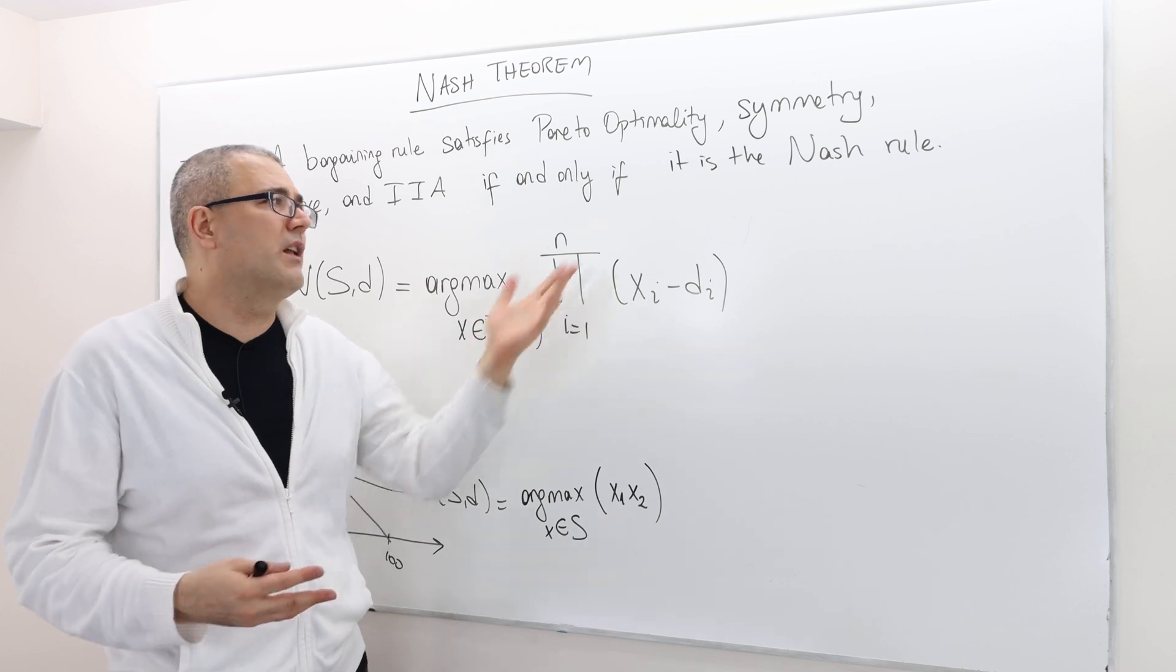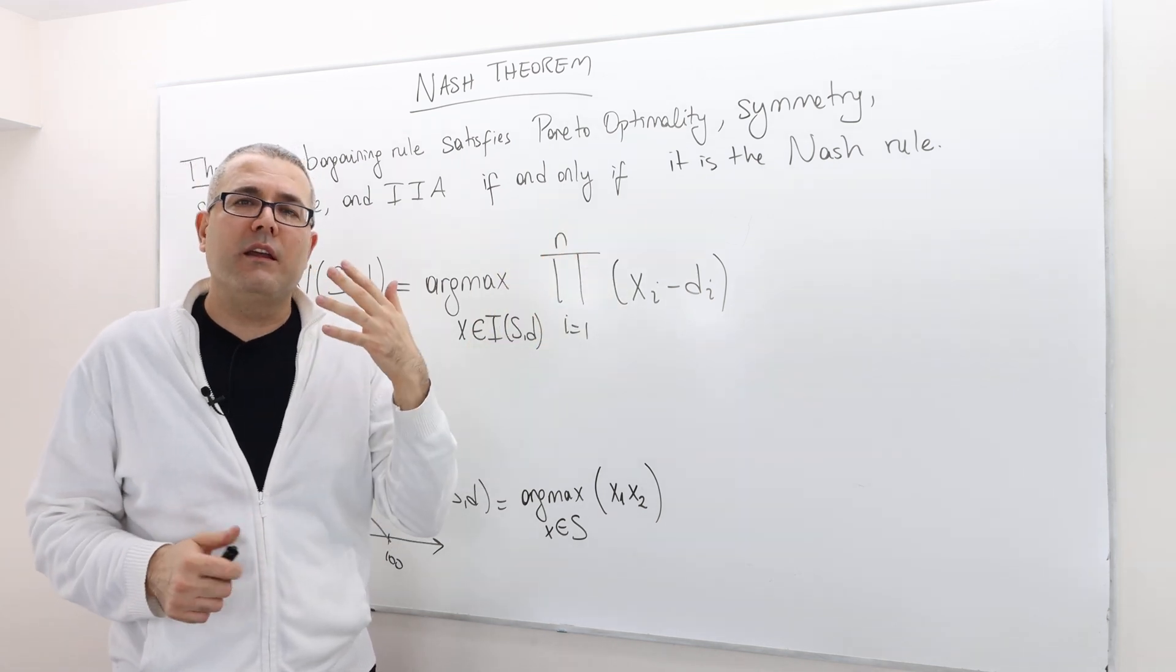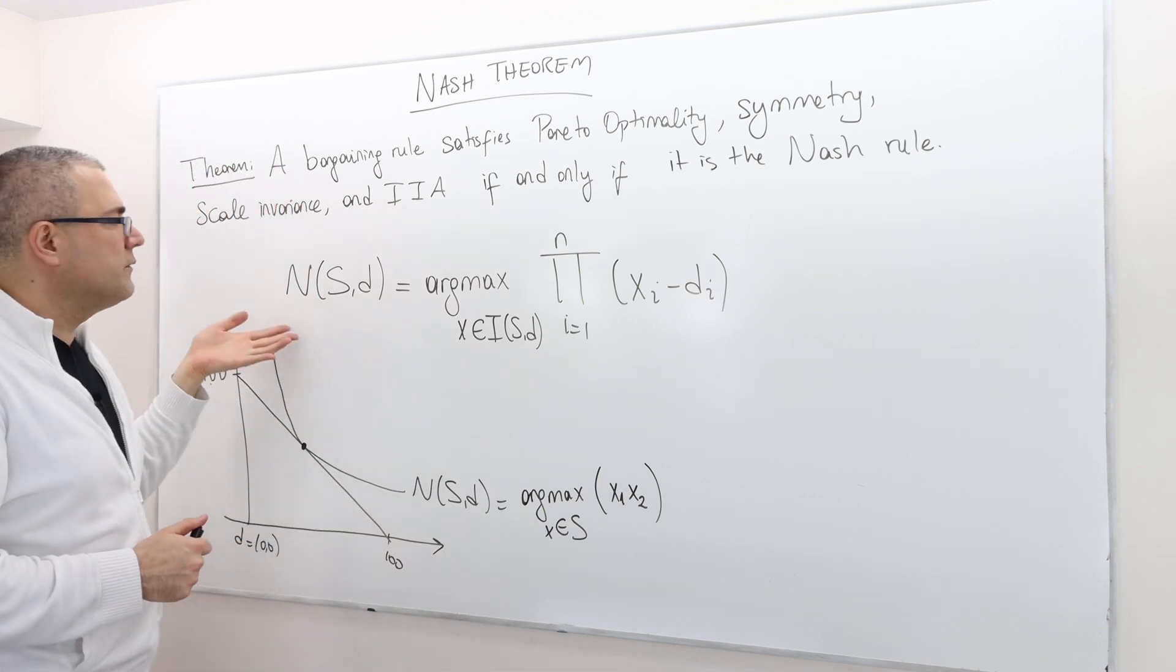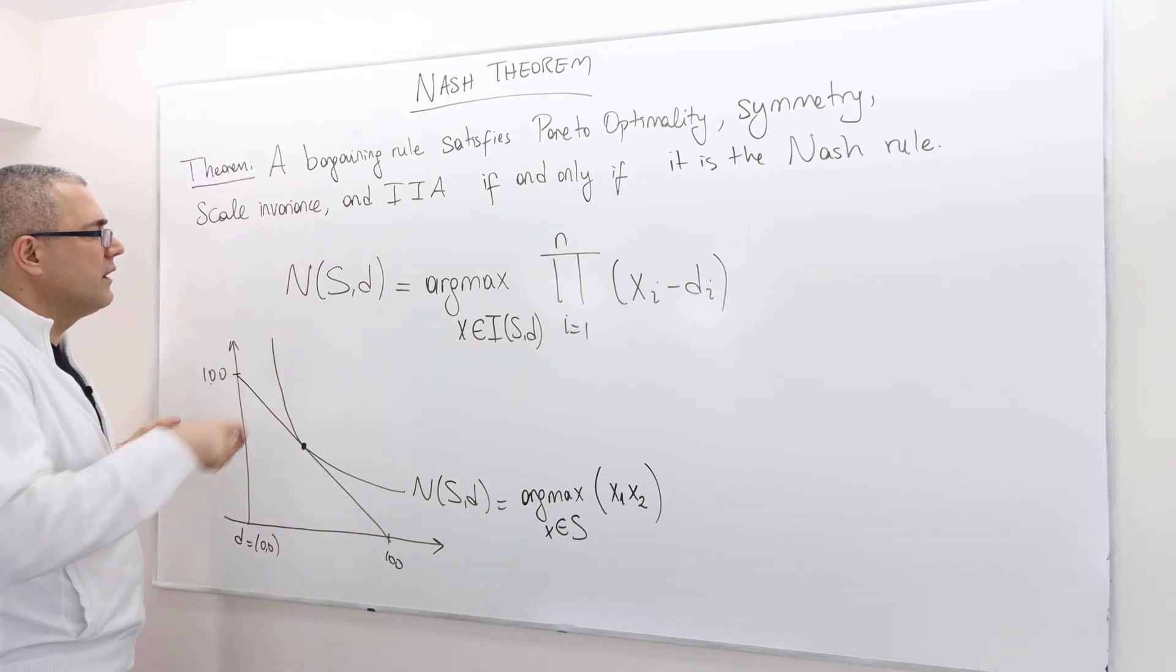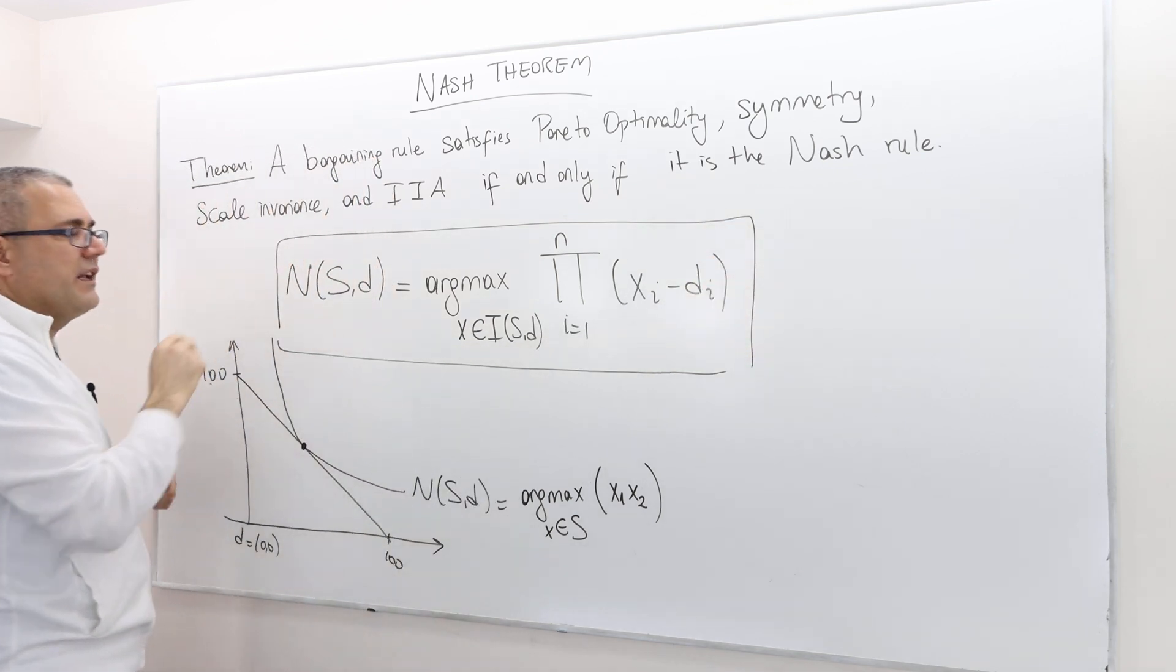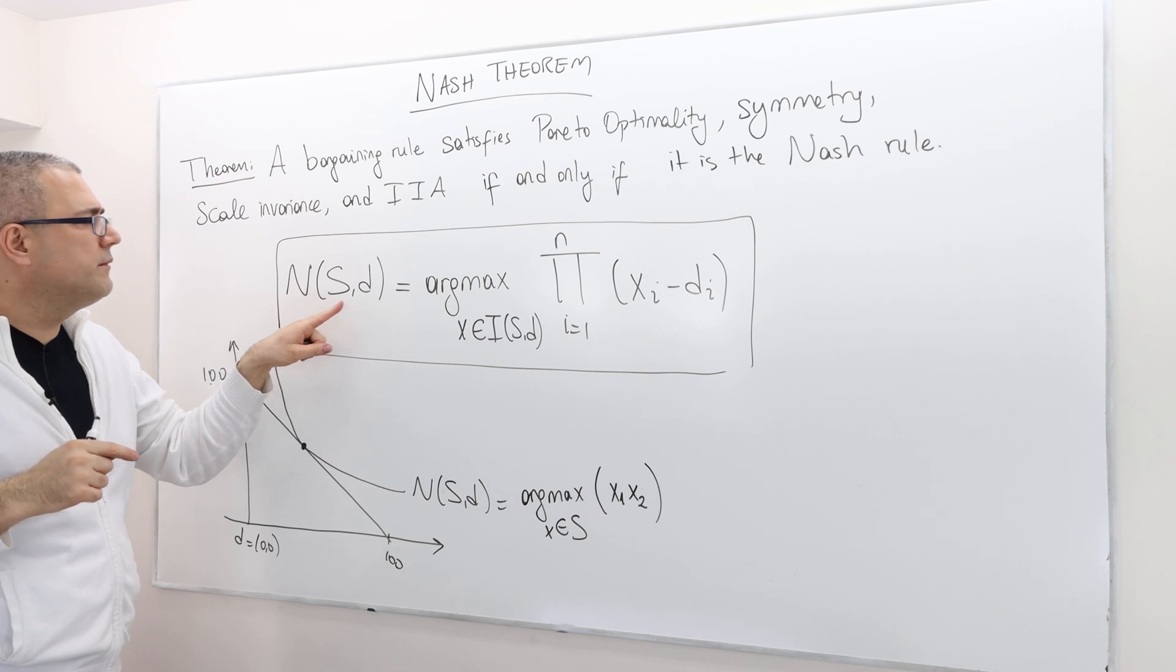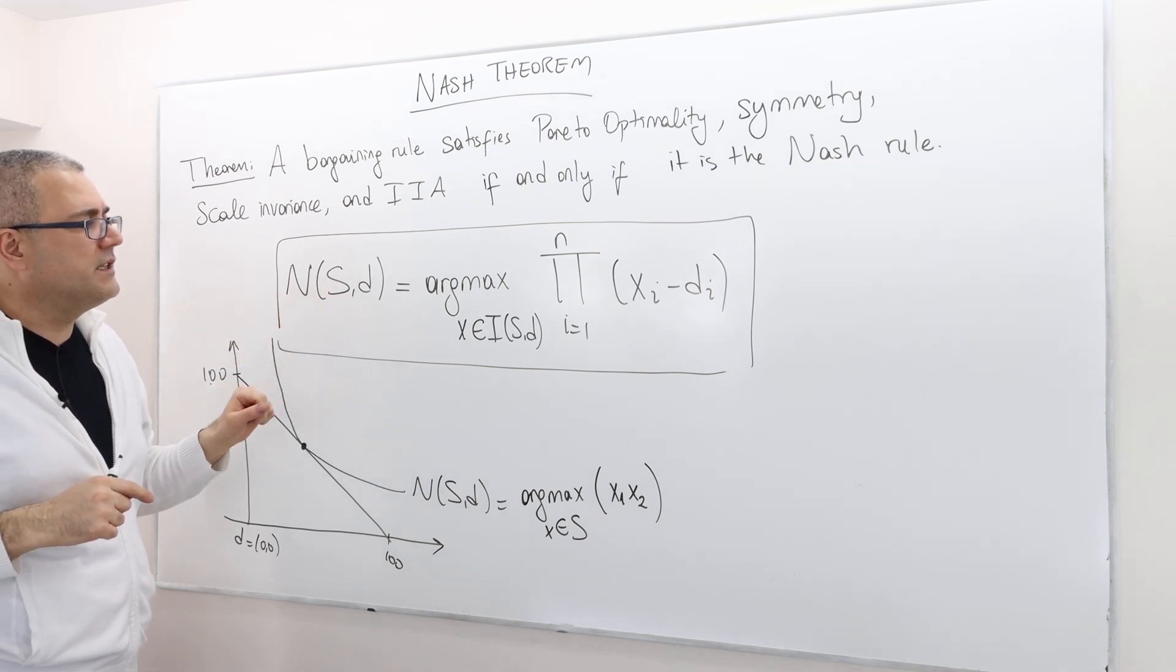And this rule is what, well, John Nash doesn't call it Nash Rule, but the rule is basically defined by this. I use the notation N(S,d) rather than F. So the Nash Rule for given bargaining problem S and d,